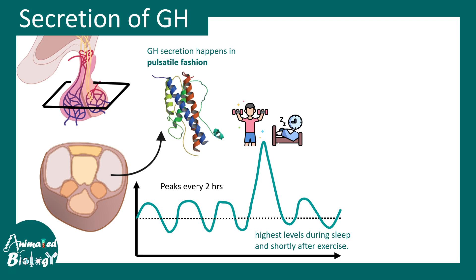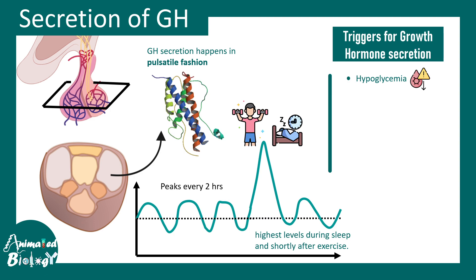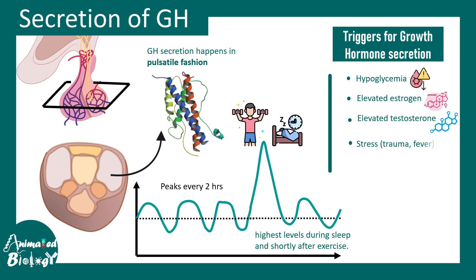The trigger factors for growth hormone secretion include hypoglycemia, elevated estrogen and progesterone (as during puberty when growth is most active), stress such as trauma or fever, and specific stages of sleep.